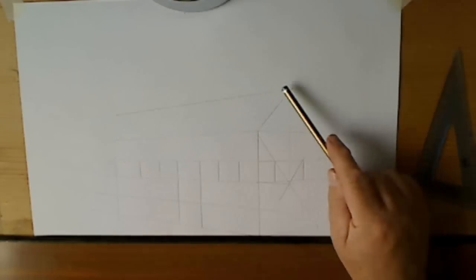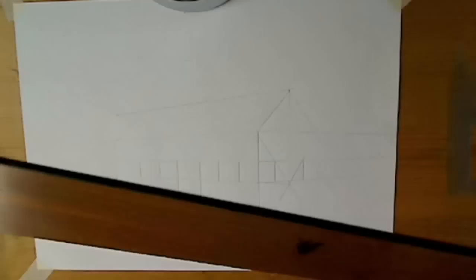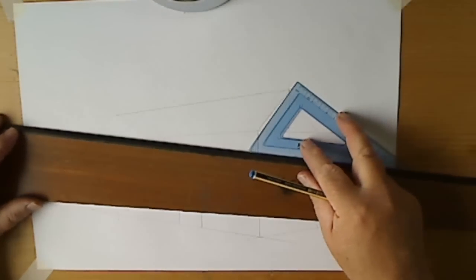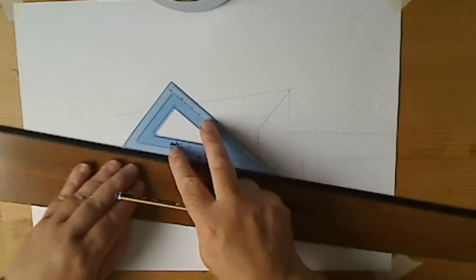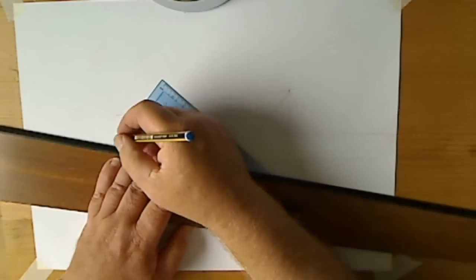The slope on there is roughly the same as the slope there. So just project that angle across and draw that then.